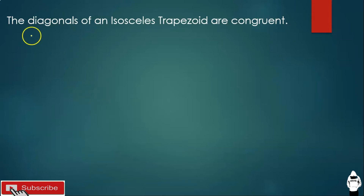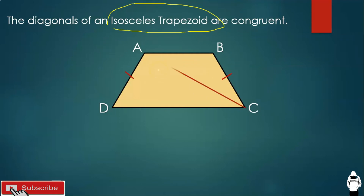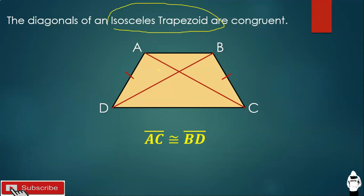The next theorem: the diagonals of an isosceles trapezoid are congruent. Let's have this figure. Since the trapezoid is isosceles, the legs are congruent. If we draw diagonal AC and diagonal BD, these diagonals are congruent. In short, segment AC is congruent to segment BD.